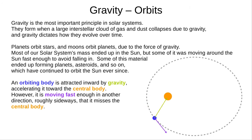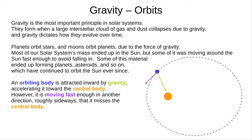An orbiting body is attracted inward by the force of gravity, shown here in green, but it's moving fast enough in another direction that it misses the central body. The velocity, shown here in purple, is 90 degrees from the force of gravity in a circular orbit, and at a varying angle in an elliptical orbit.